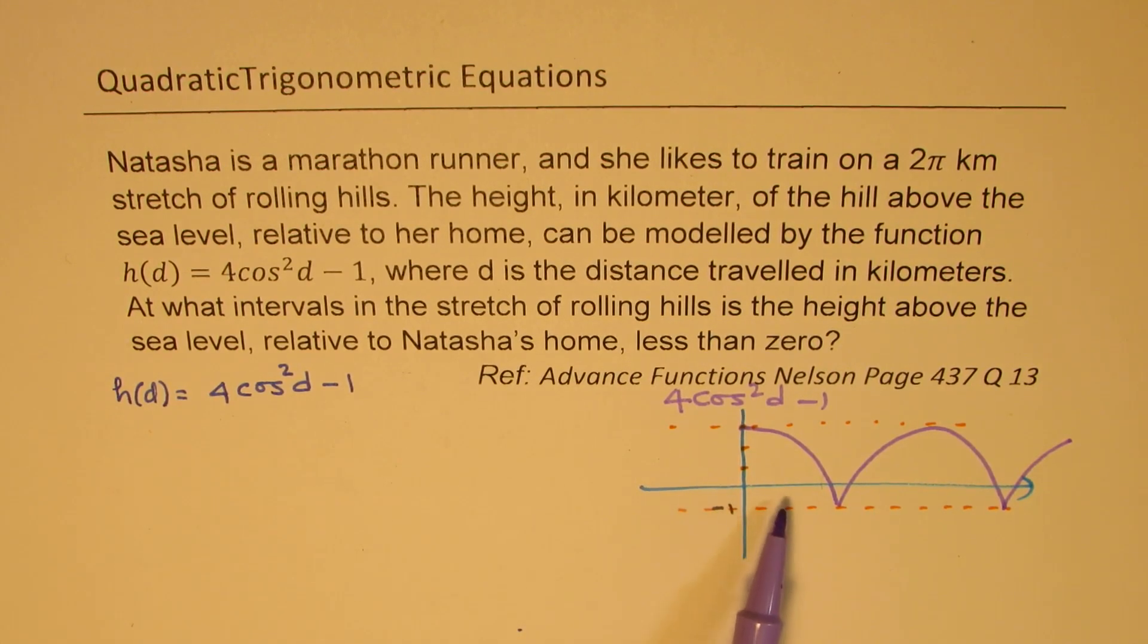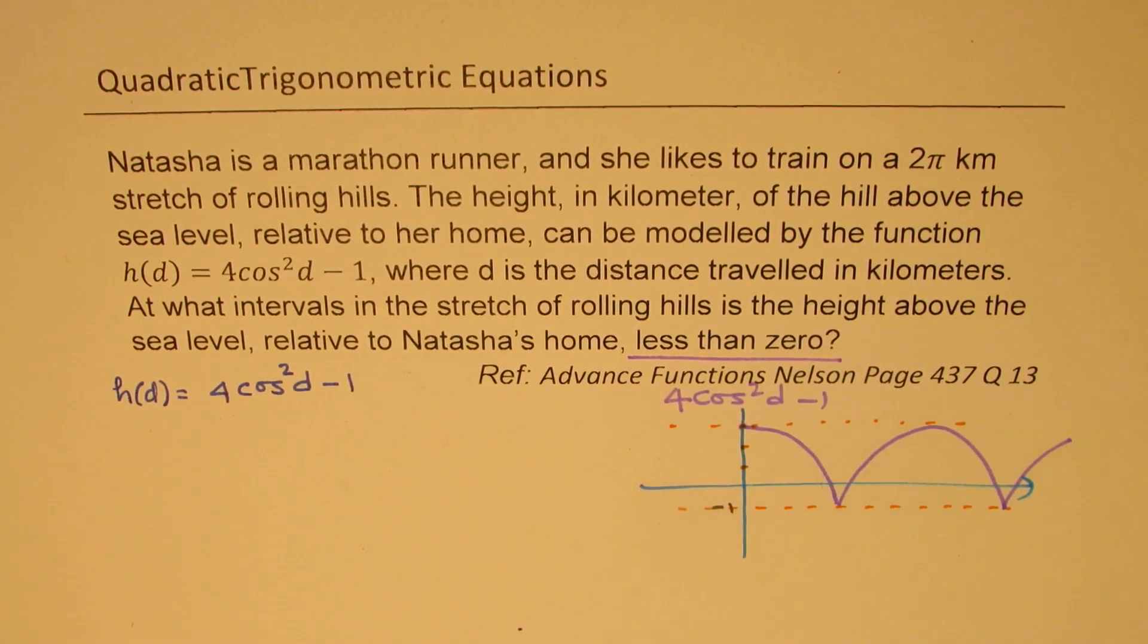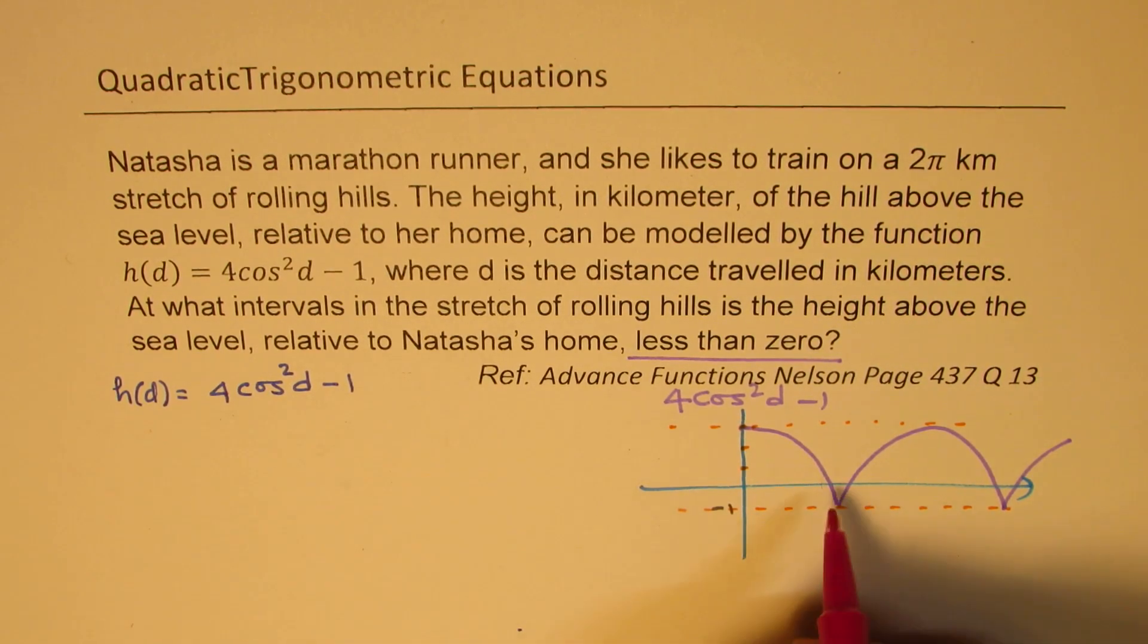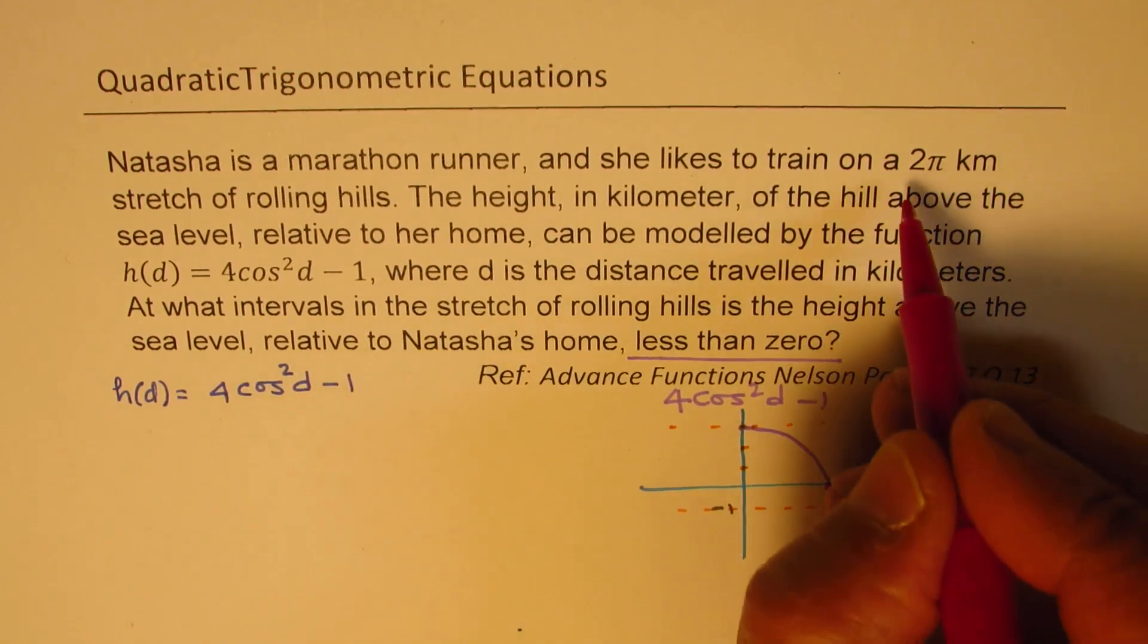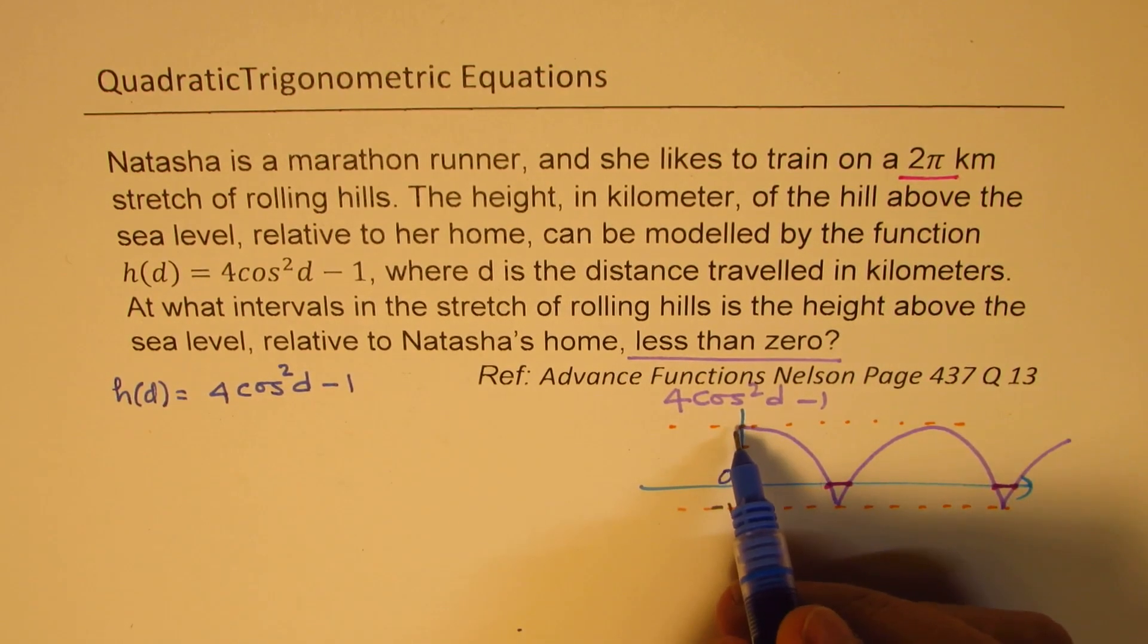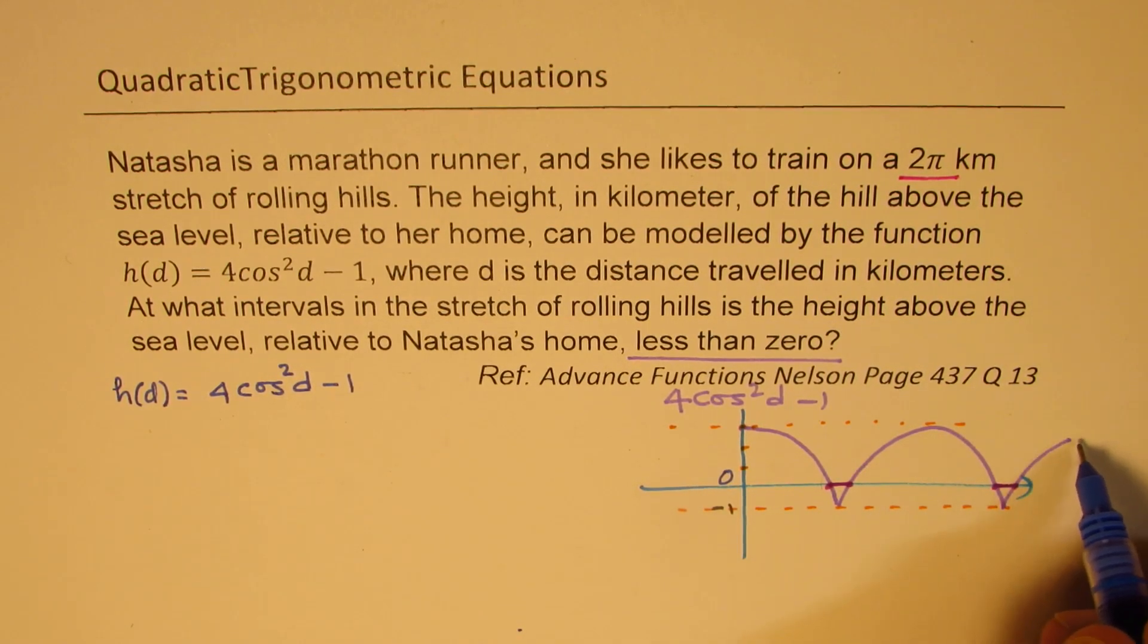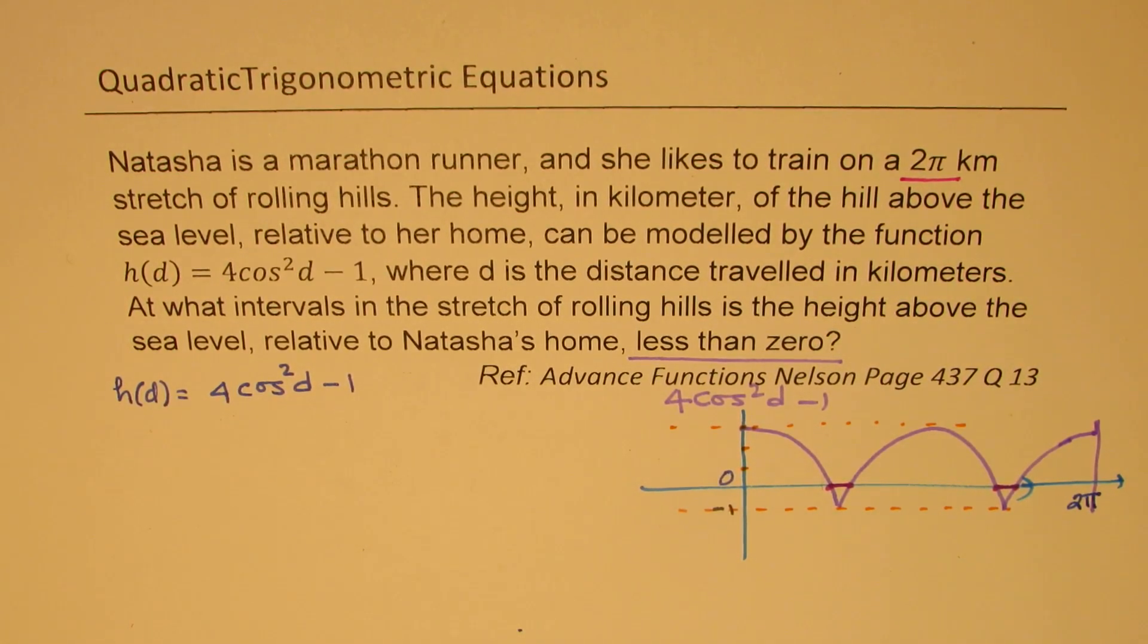Now we are looking for the points when it is below this. Now when you say that less than 0, less than 0 will mean we are actually looking for these points. So we are looking for the x-intercepts. When is this 0? Less than 0 and that too in the interval of 2π. So one wave will basically be from here going up to this point. Let me just complete this portion, so up to this point. So we have 2π there.